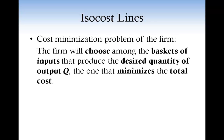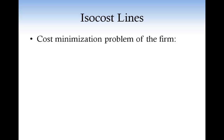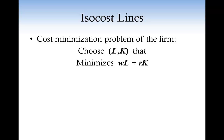Now we have all the ingredients to express the cost minimization problem of the firm. The firm will choose among the baskets of inputs that produce the desired quantity of output Q the combination of inputs that minimizes the total cost. More precisely, the firm chooses the combination of inputs L, K that minimizes the cost of the inputs — that is, WL plus RK — subject to the constraint of producing Q units of output.